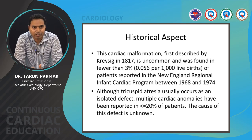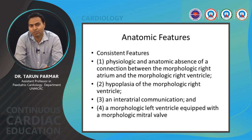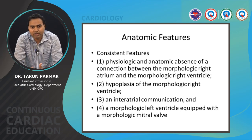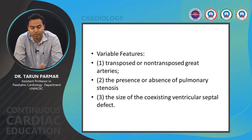Anatomically, there is a physiological and anatomical absence of connection between the morphological right atrium and right ventricle, with hypoplasia of the RV and an obligatory interatrial communication. The morphological left ventricle is equipped with the mitral valve. Variable features include normally related or transposed great arteries, presence or absence of pulmonary stenosis, and the size of the coexisting VSD, which can range from small to large.